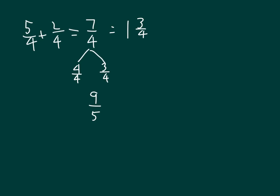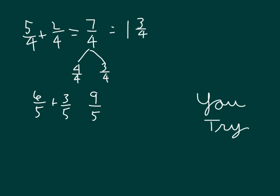Now if we had nine-fifths, can you express it with its wholes and its fractional parts? Pause the video while you do your work. For instance, we could have had six-fifths plus three-fifths equaling nine-fifths, and then we would have to rewrite nine-fifths as a mixed number. Nine-fifths can be broken apart as five-fifths and four-fifths. Five-fifths is equal to a whole, and then we still have four-fifths as our fractional part. Read the whole number sentence: six-fifths plus three-fifths equals nine-fifths, which does equal one and four-fifths.